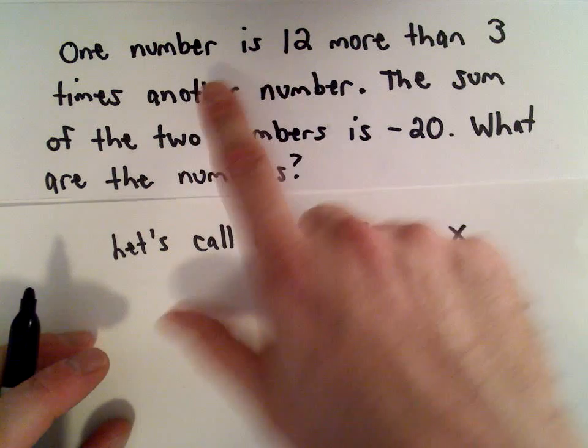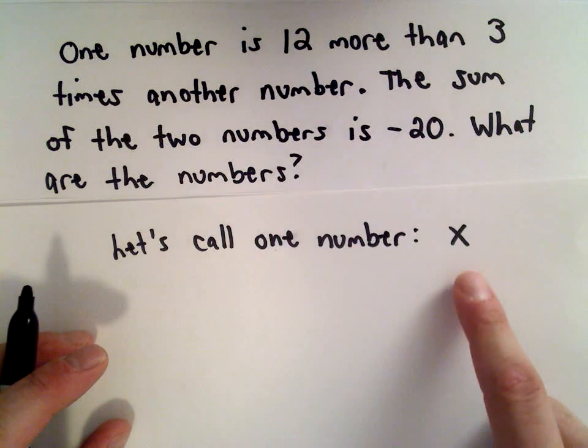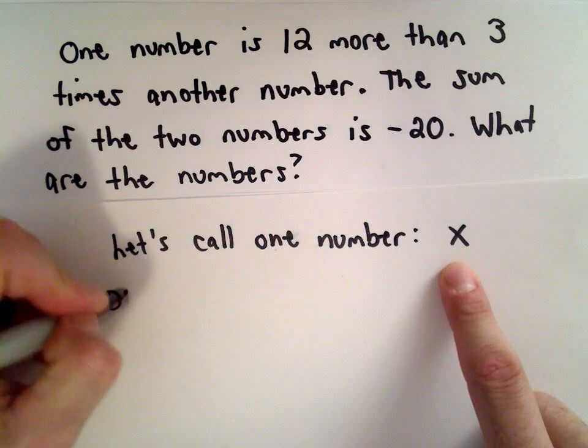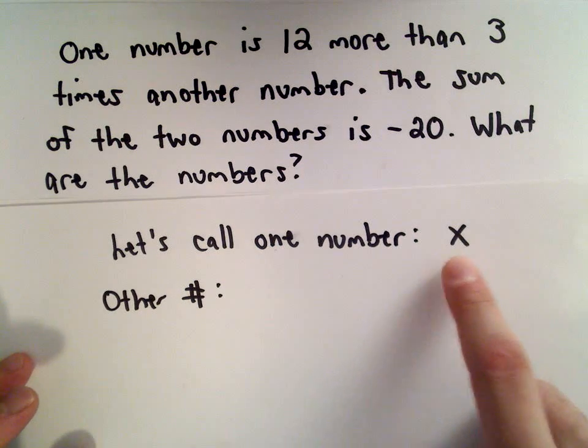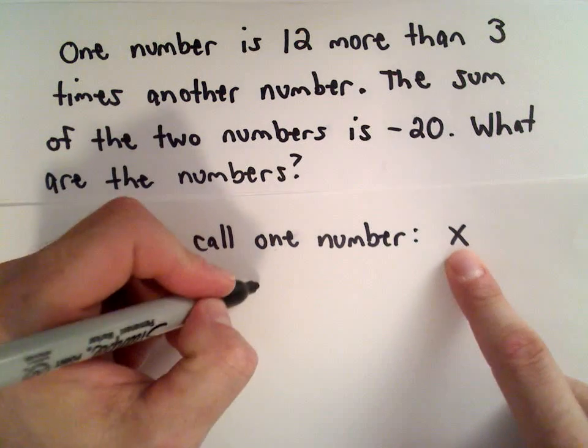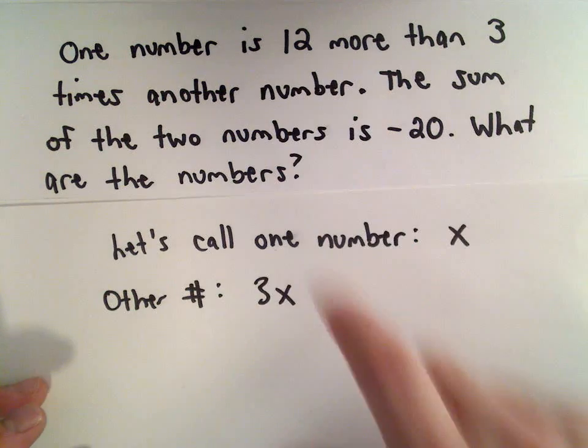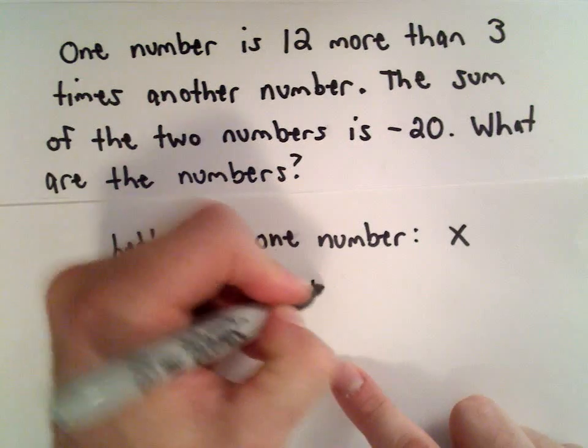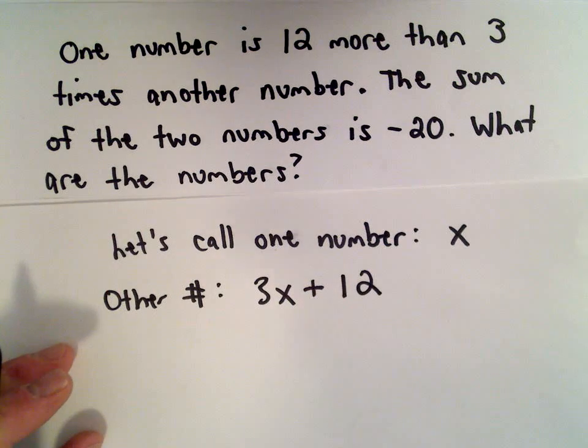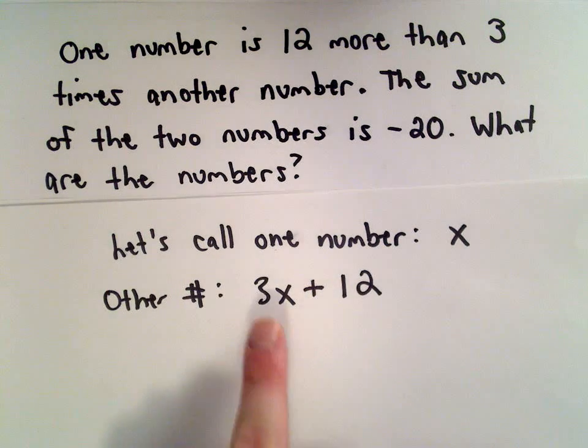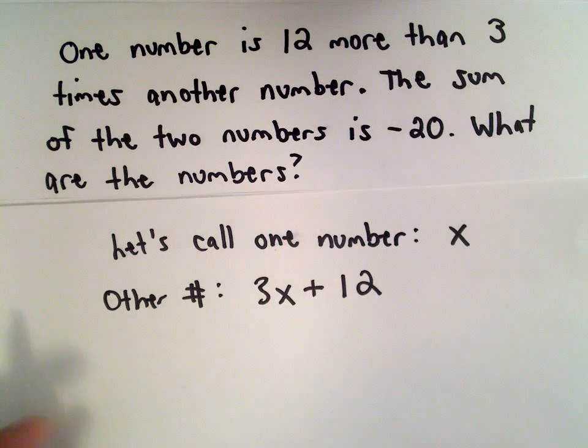Now the other number is 12 more than 3 times that number. So we have to take 3 times that number, and then it's 12 more. To get to this other number, we take 3 times that number and add 12. So 3 times that number plus 12—that's the other number.